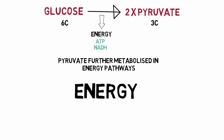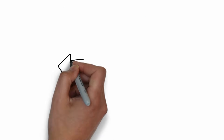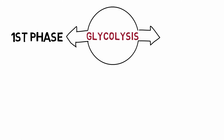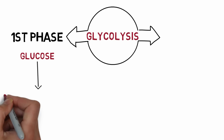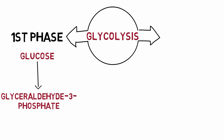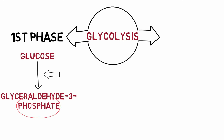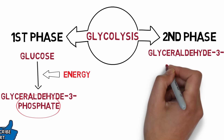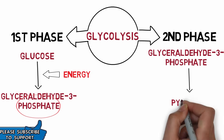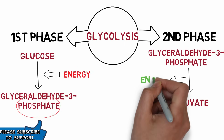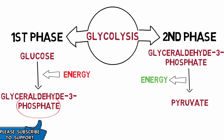The process of glycolysis takes place in two phases. In the first phase, glucose is converted into two molecules of glyceraldehyde 3-phosphate. Since this conversion involves addition of phosphate, the first phase actually uses energy instead of producing it. In the second phase, glyceraldehyde 3-phosphate is converted into pyruvate, and it is in the second phase that energy is actually produced.